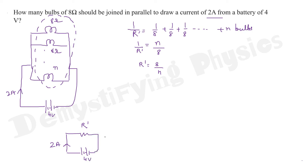So, what is the current from here? Or you can find R dash from here. What is R dash? V by R, 4 by 2. It is 2 ohm.